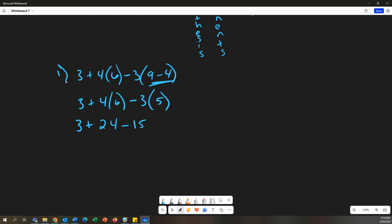Again, add, subtract, left, right. 3 plus 24 would be 27, and then subtract that 15 to get 12. And there's your answer. Let's look at another one.